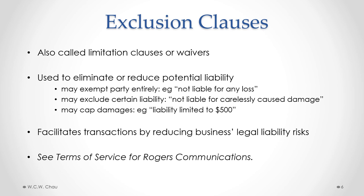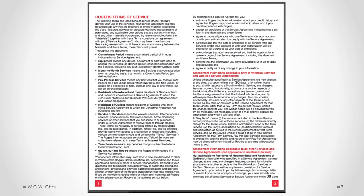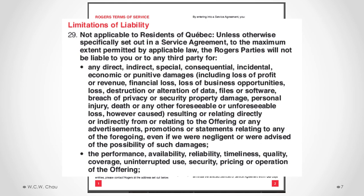For many of our examples, we will look at the Rogers Communications Terms of Service — a contract that some of you may have entered into if you are a Rogers subscriber for your cell phone. The exclusion clause for Rogers is found in Section 29 of that agreement. This is the Rogers Terms of Service contract — a standard form agreement — and Section 9 is where we find the limitation or exclusion clause. It is very long and detailed.